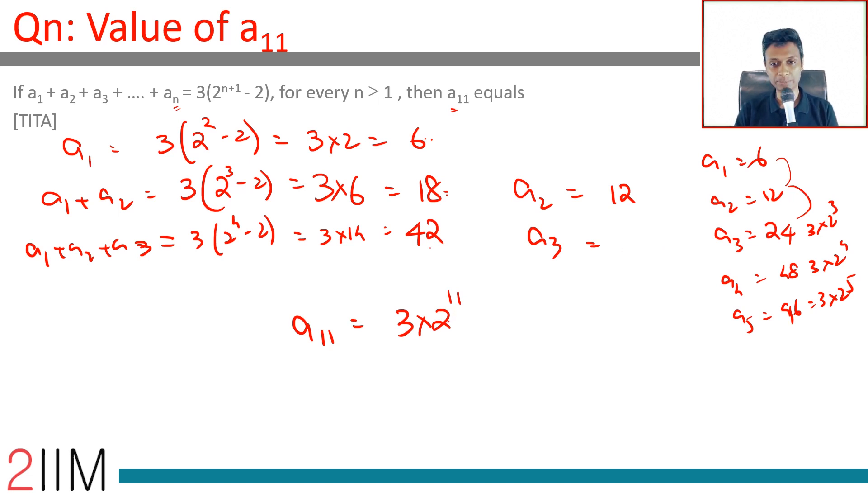2 power 10 is 1024, 2 power 11 is 2048. 48 into 3 is 144, so 6144.